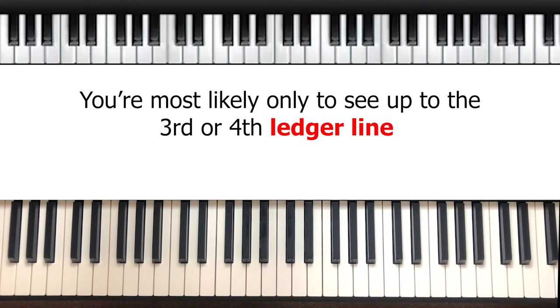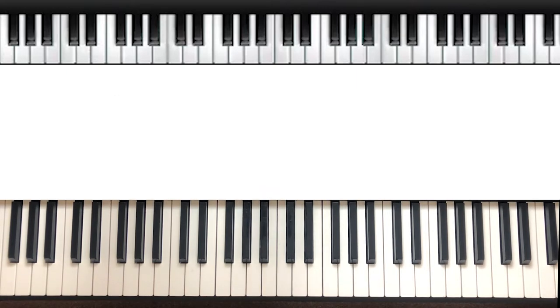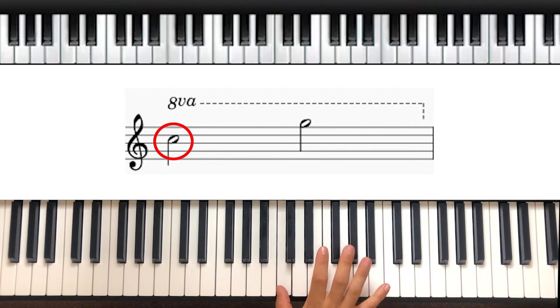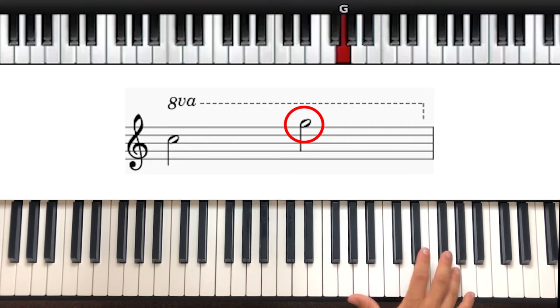You're most likely only to see up to the third or fourth ledger line because we can add in this sign which means one octave higher, or ottava alta. So this note can become this note, and this one would become this one.